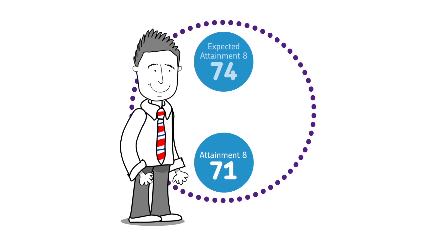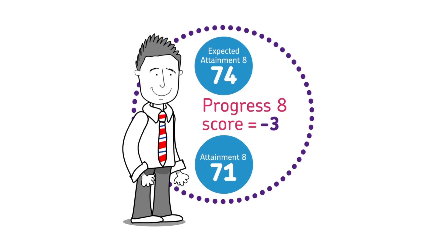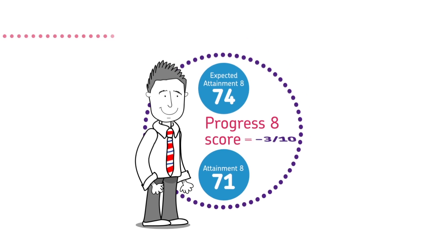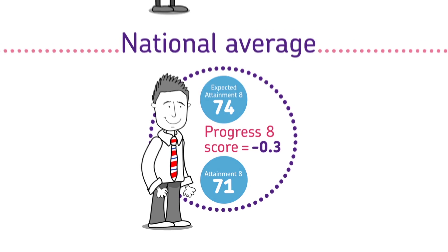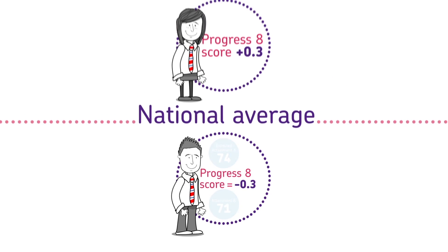It is calculated by taking their actual Attainment 8 score and subtracting their expected Attainment 8 score. The expected score is taken from the national average Attainment 8 score of all students with the same prior attainment at Key Stage 2.